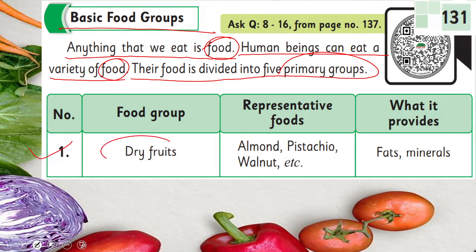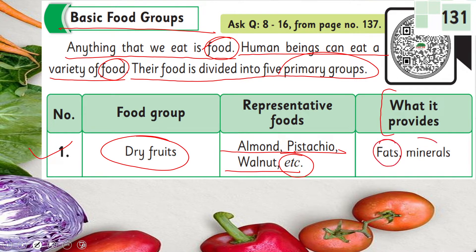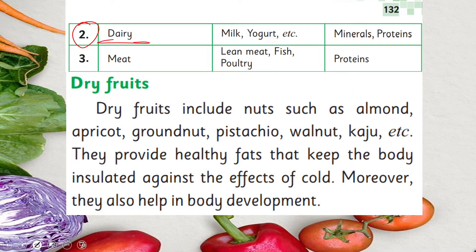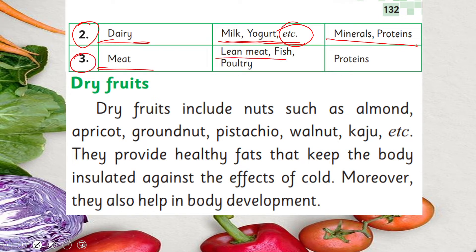Number one is dry fruits - these are almonds, pistachio, walnut, etc. They provide fats and minerals. Number two is dairy, which provides us with milk, yogurt, etc. - it provides minerals and proteins. Number three is meat - lean meat, fish, and poultry - and it provides us with proteins. Today we will study three groups: dairy, meat, and dry fruits.